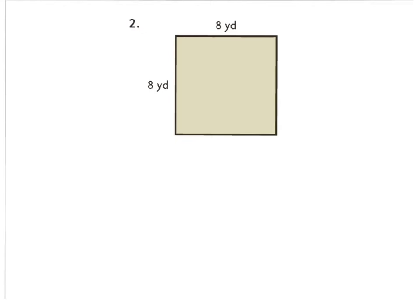Okay, so for number 2, this is actually a square, but we all know that a square is in the rectangle family. So you would still do your formula which is area equals base times height. And our base and our height, because it's a square, is going to be the exact same. So you would do 8 times 8 equals 64.